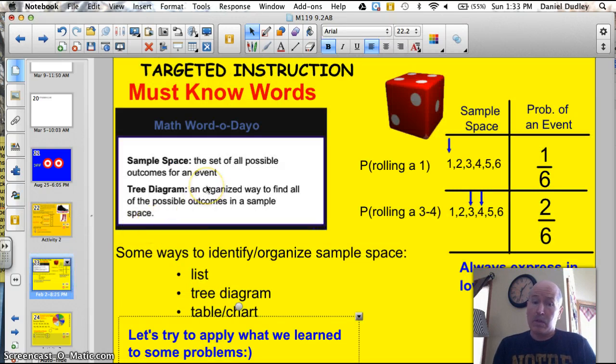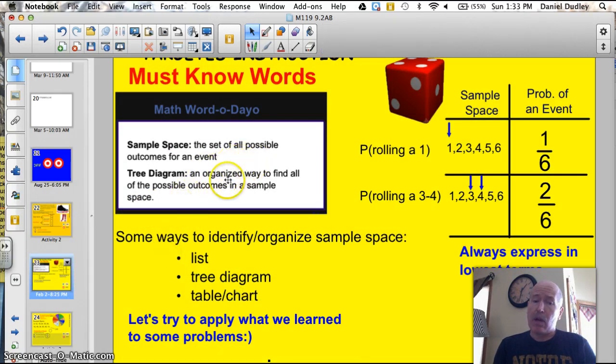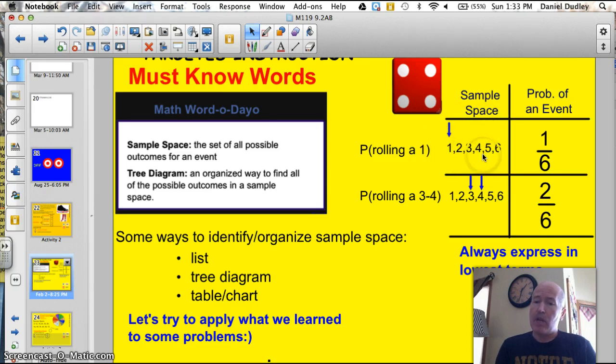So, guess what the words of the day are? Sample space: the set of all possible outcomes for an event. And then we've got tree diagram: one organized way to find all the possible outcomes in the sample space. Let's just take a quick look here at the spinning die. What's the probability of rolling a one? Well, the sample space would be a one, two, a three, four, five, or six. These are all the possible outcomes. And, of course, there's only one chance of throwing a one. So, it's one and six.